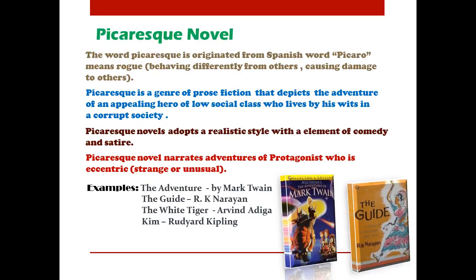Picaresque novels. This is a form of novel where the hero is in poor conditions and lives by his wits. He has his own ideals and is fighting against the corrupt society. This is the main style and genre of prose writing where the hero goes against society for his own achievement of goals. Picaresque novel writers adopt a realistic style of writing; they can also use comedy or satire. The hero might even harm others for his own goals or ideals.